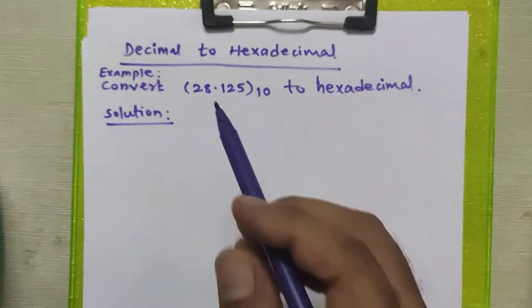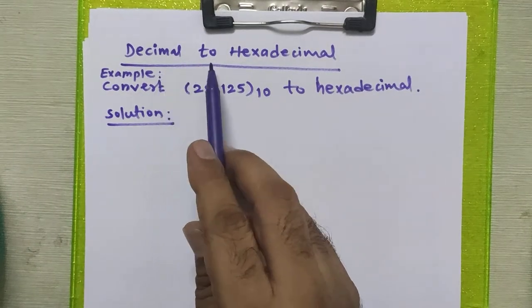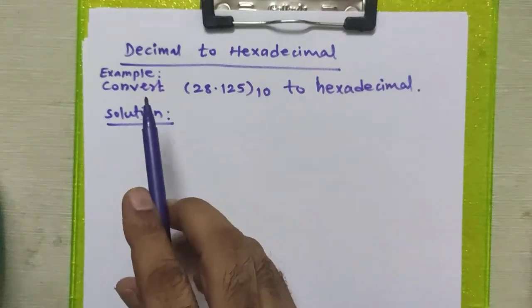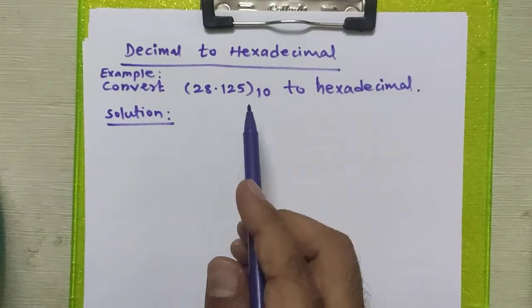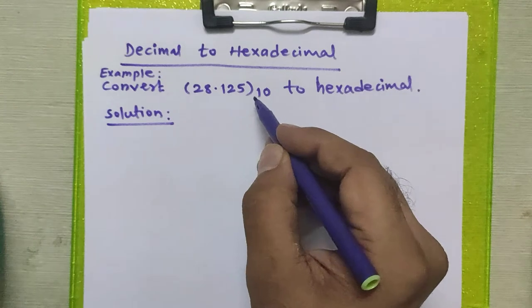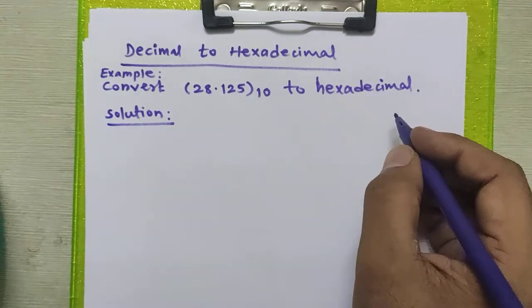Hello friends, in this problem we are going to convert a decimal number to a hexadecimal number. Consider this example given to us: 28.125 decimal to hexadecimal.